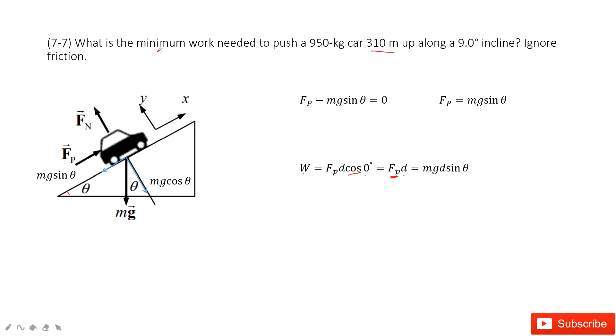Because it tells us to find the minimal work. So minimal work, that means this force is minimum. So this Fp minimum means it can keep this car with the force balanced. The car moves at constant speed.